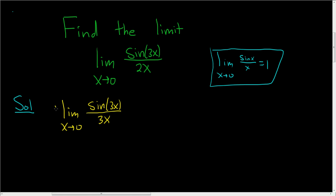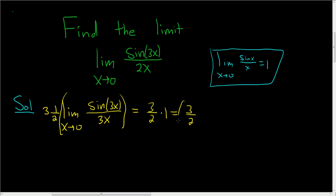We can pull the 2 out — that's really 1 half. And then in order to get rid of the 3, we can multiply by 3, so we end up with 3 halves. This limit here is 1, so the answer is 3 halves.